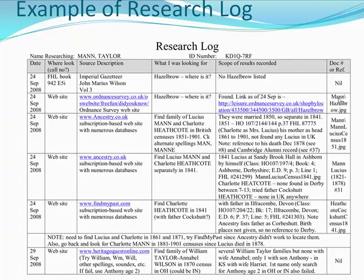Their document or reference — this is where they put their reference if they find something. Or you can put a slash mark through it, or 'nil,' or anything that will let you know that you have looked at this resource and don't have to do it again. The second entry went to a website. We have the address of the website, and they're still looking for Hazelbrow. The result says it was found as of September 24th. Here's the link — this is really important because sometimes links do get broken, so we know this link was viable as of that date. And they looked at a various assortment of different sources.